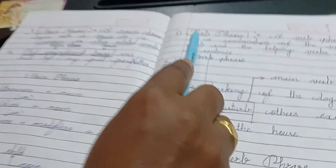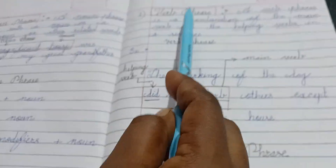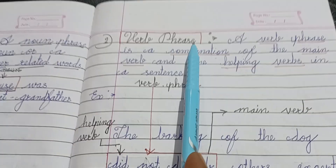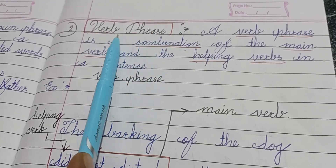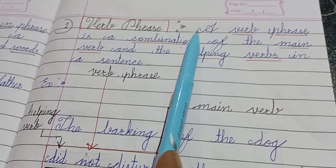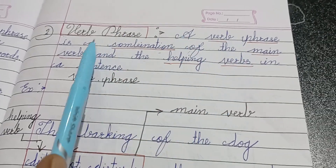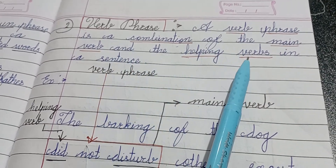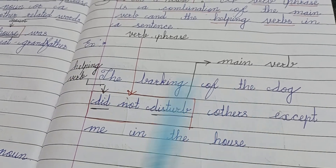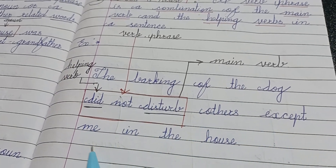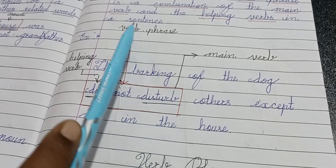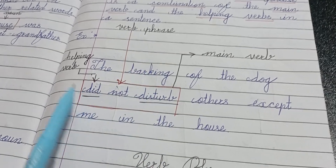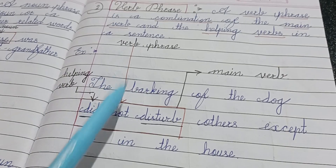The second kind is verb phrase. A verb is an action word or state — for example: cry, love, sit. The definition of verb phrase: a verb phrase is a combination of the main verb and the helping verbs in a sentence. For example: 'The barking of the dog did not disturb others except me in the house.' Here 'did not disturb' is the verb phrase — 'did' is the helping verb and 'disturb' is the main verb.